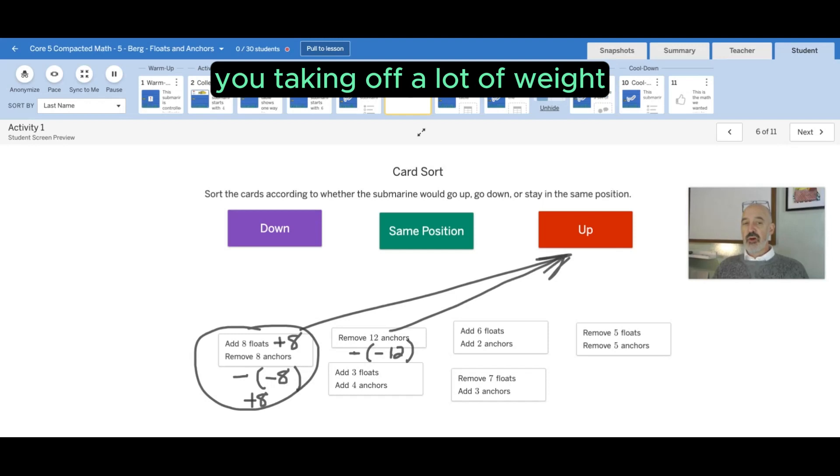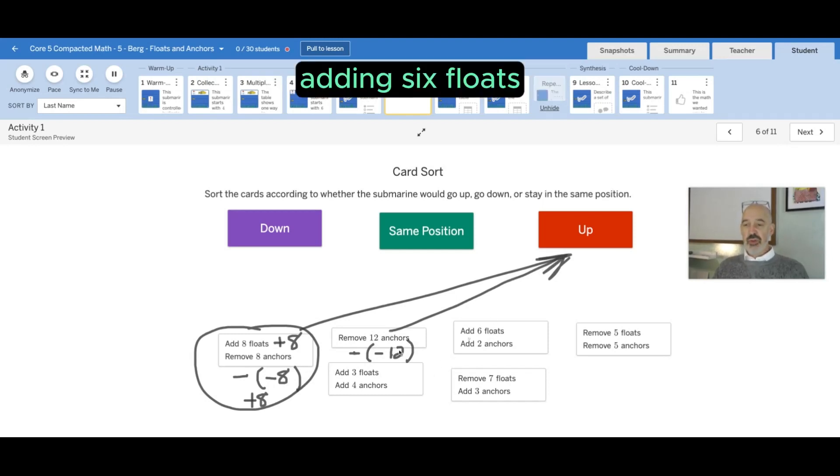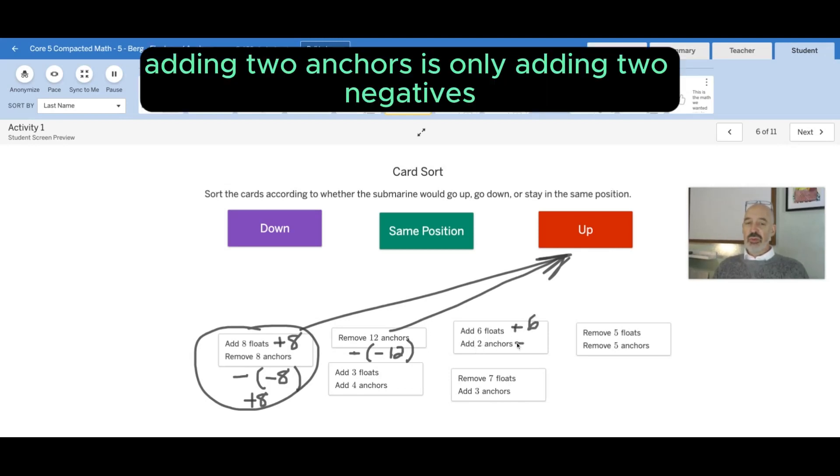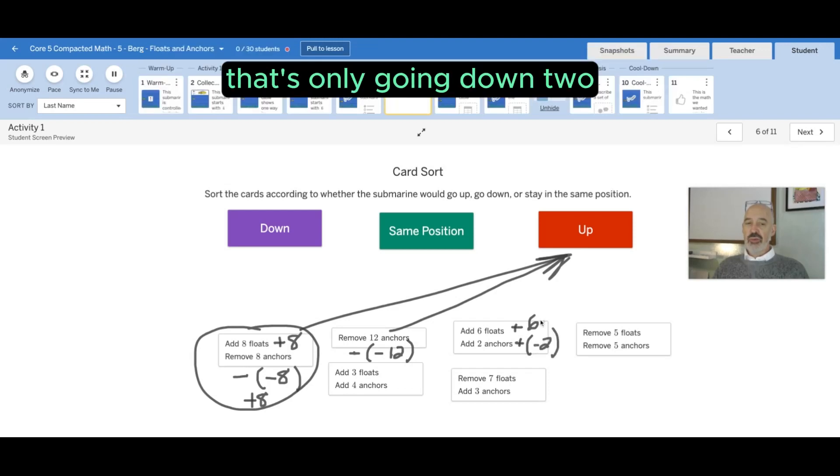Adding six floats, well adding six floats is going up six. Adding two anchors is only adding two negatives, that's only going down two. So this is also an up card.